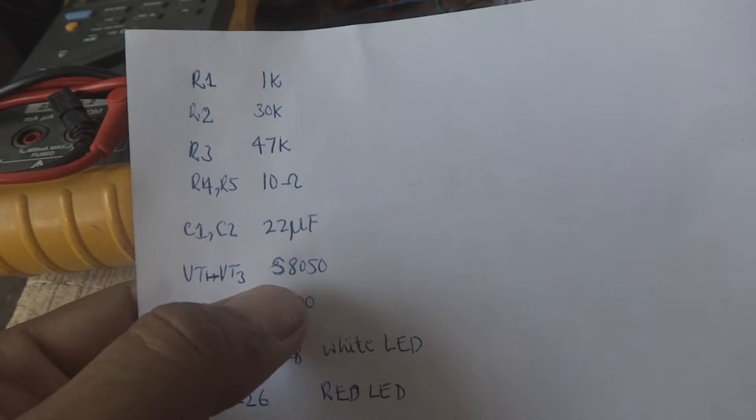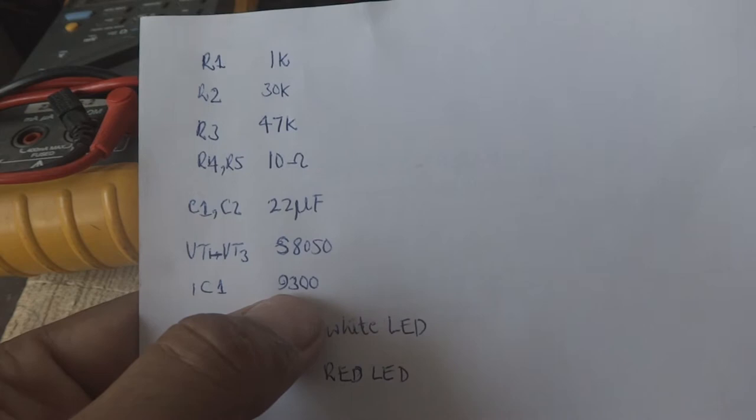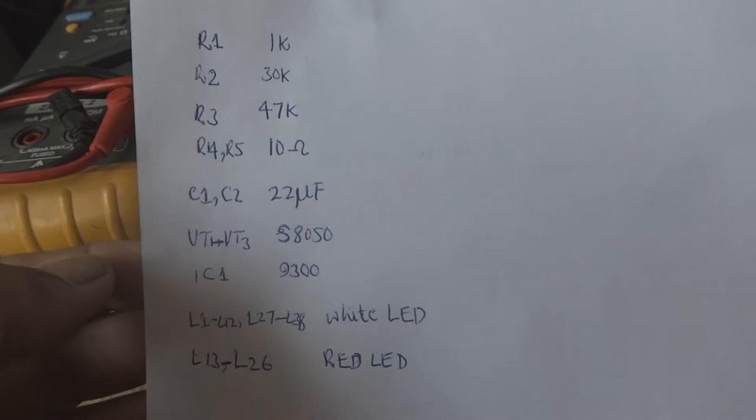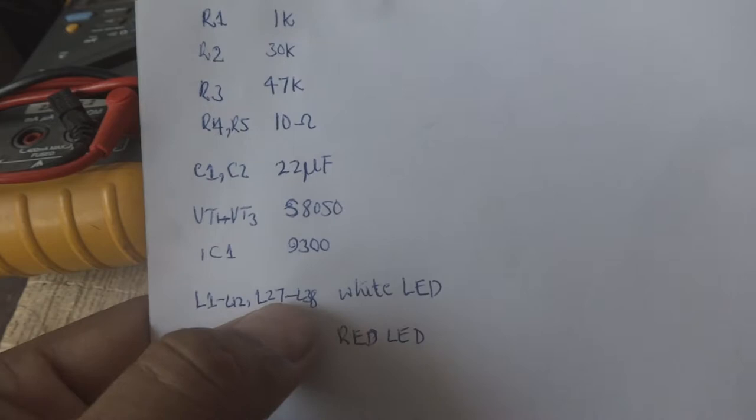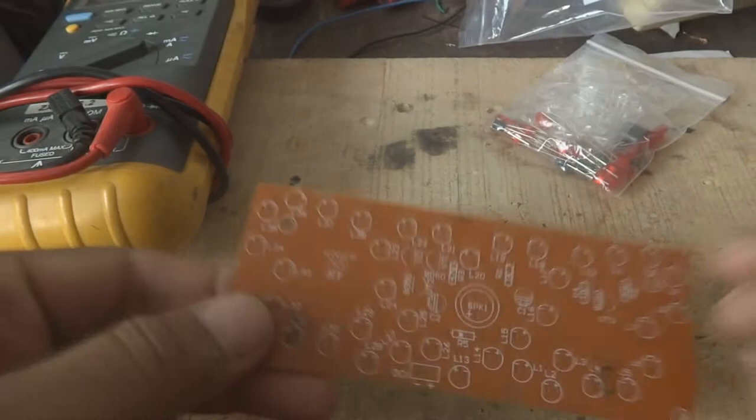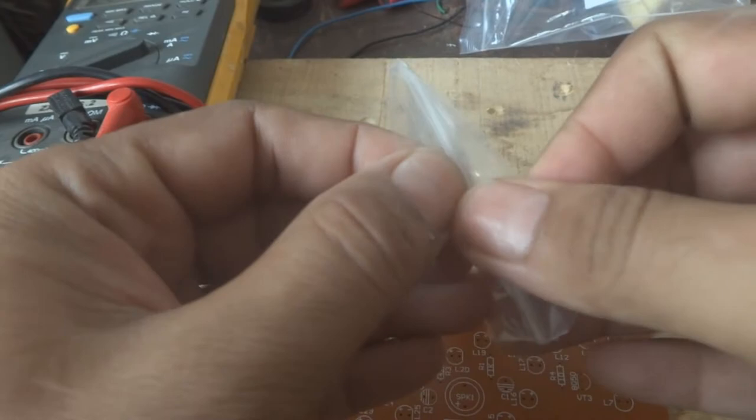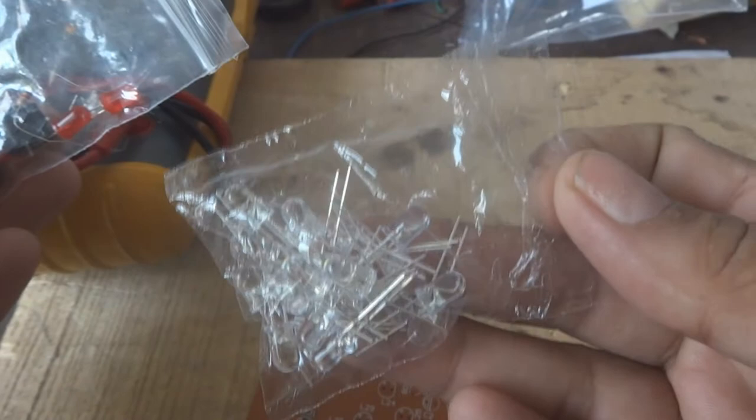C1 and C2 are 22 microfarad capacitors. VT1 to VT3 are three S8050 transistors. IC1 is 9300, possibly UM66 IC. L1 to L12 and L27 to L38 are white LEDs, L13 to L26 are red LEDs. We'll complete this butterfly using these components and this detail, which is nicely mentioned.